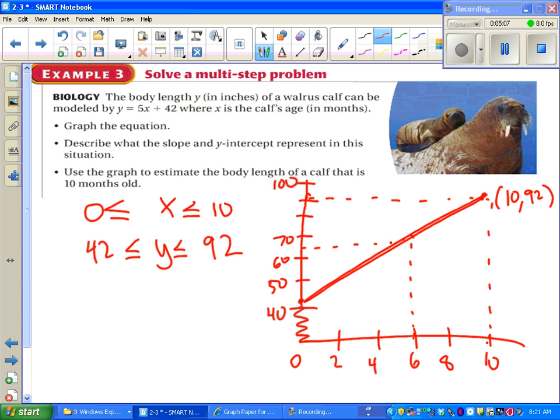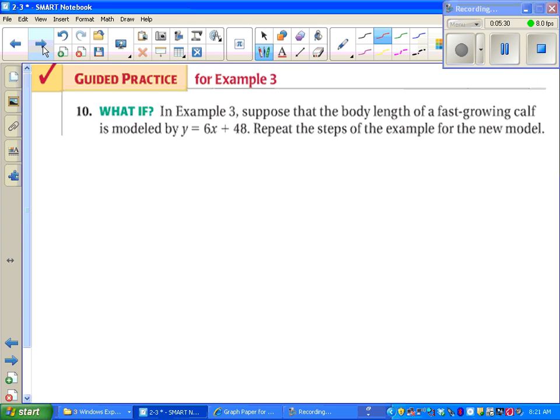And to use our correct units, that 92, we don't want to just say 92. We want to use the correct units, which would be the calf's age. Now the calf's age is the input. The output is the body length. So 92 inches. And that's when the calf is ten months old. At this point, you can pause the video and try this on your own. Or you can do this later.